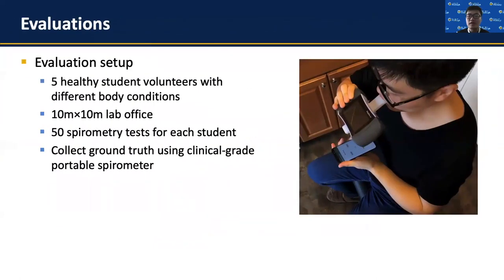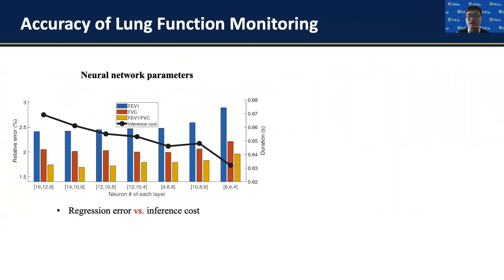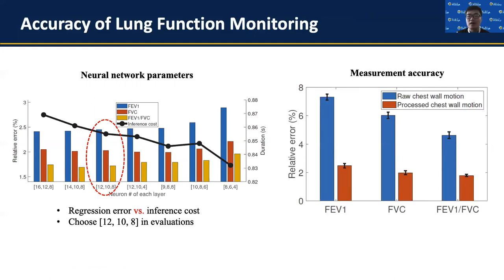We first evaluated Spirasonic over five student volunteers in our lab office. Each volunteer used both Spirasonic and a clinical-grade spirometer simultaneously, and we compared their results. For each volunteer, we tested the error of Spirasonic using the other four volunteers' data as training. We determined the neural network parameters by comparing the trade-off between regression error and inference cost — a three-layer network with 12, 10, and 8 neurons was chosen. After eliminating multiple human factors, the error of estimating lung function indices is reduced by more than five percent, with error constrained below three percent.